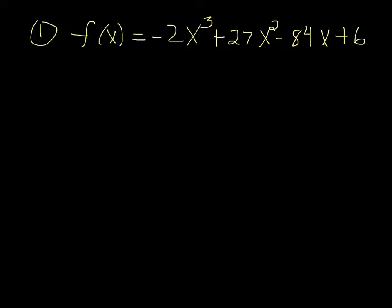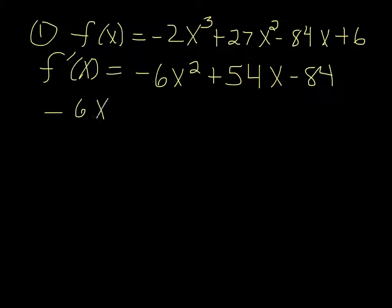Number 1, we are looking at the function f(x) = -2x³ + 27x² - 84x + 6. It has one local minimum and one local maximum. We need to find them. So we need the derivative, which is -6x² + 54x - 84.